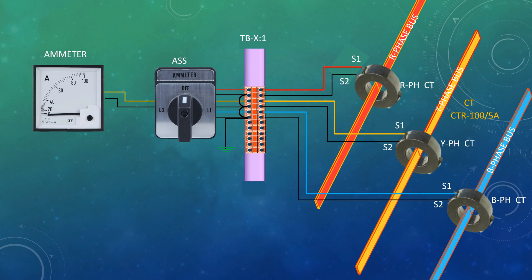By using an ampere selector switch, a single ammeter can be used. ASS, ampere selector switch, is a special type of rotary switch.